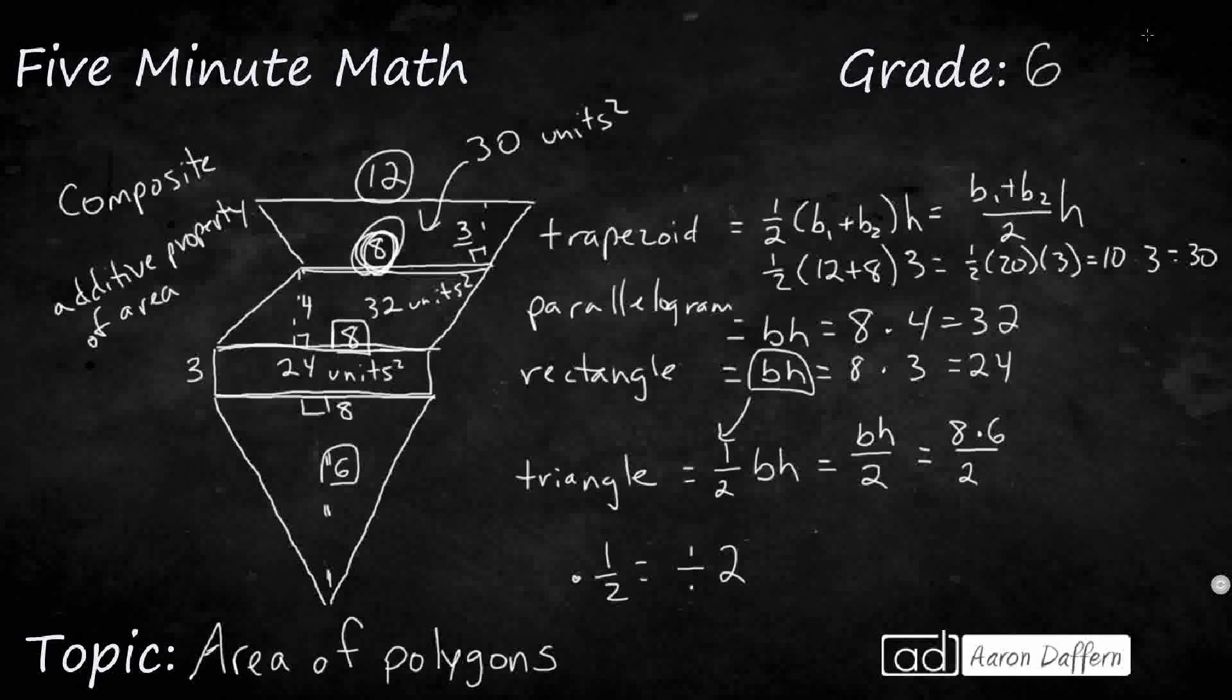And then we're going to divide that by 2. Or you can do 8 times 6 and multiply it by 1/2. So that's 48 divided by 2, which is 24. I want you to notice that my triangle and my rectangle have the same area, even though they're different shapes.